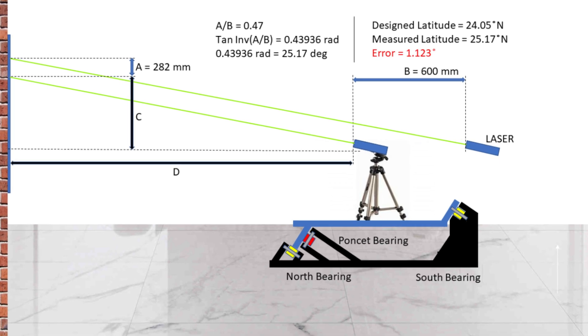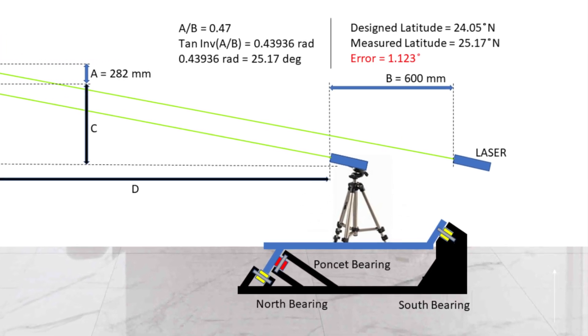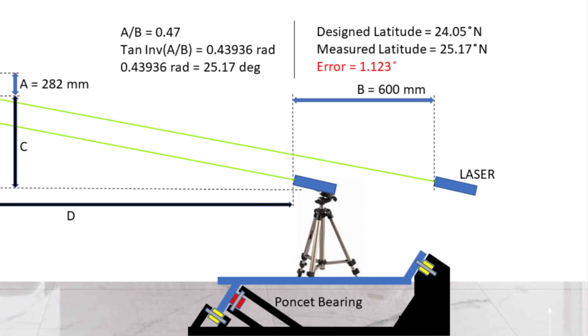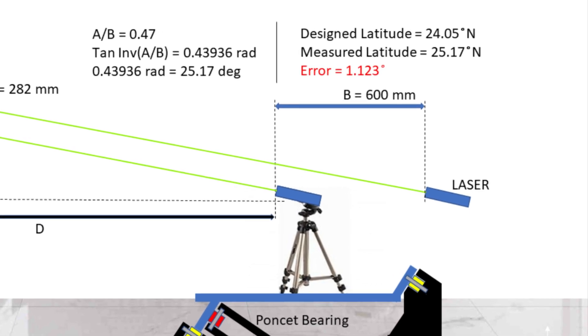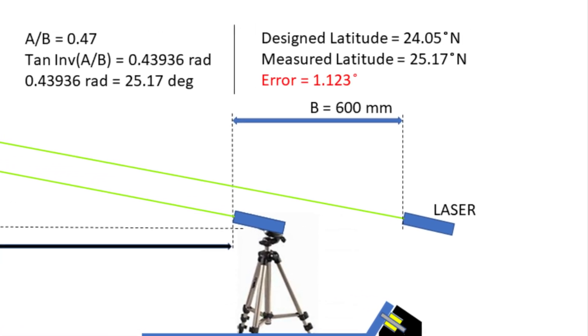This delta needs to be compensated while leveling the equatorial platform. However, we cannot do anything about the RA concentricity error, and only making a new one with high precision CNC milled metal parts probably would give accuracy in arc seconds.